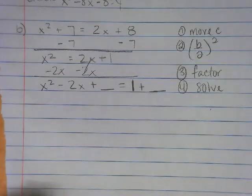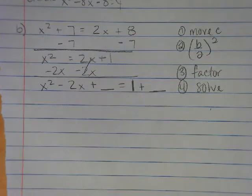So take a moment and then we'll go through it. Should have gotten 1 plus or minus the square root of 2. So you completed your, you did your B divided by 2 squared. You factored. And you moved everything over.